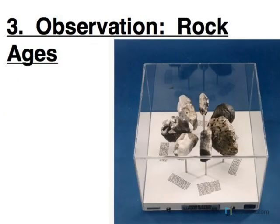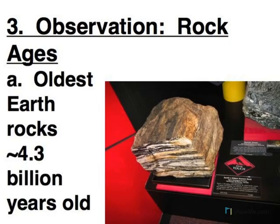Another clue we can look at is how old are the rocks that are from the Earth and from the other planets. And for this, we're going to use radioactive dating. The oldest rocks on Earth are about 4.3 billion years old. And this is a picture of one of the oldest rocks found on Earth.